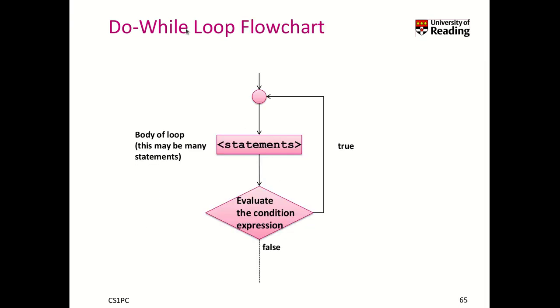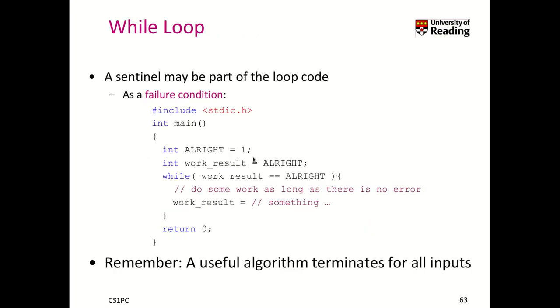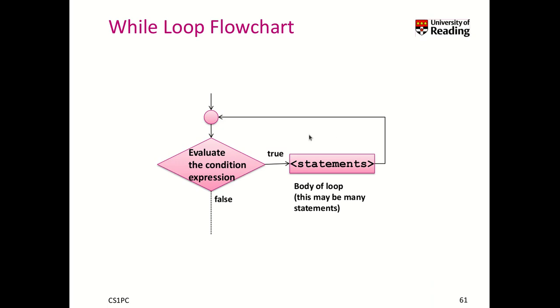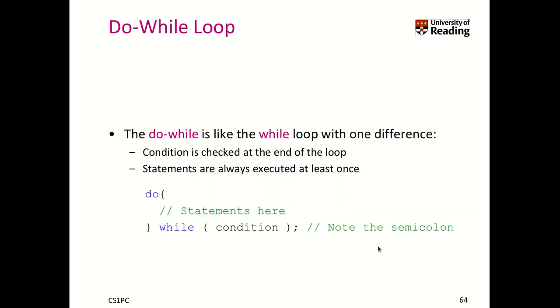Here is the do while loop flowchart. We execute the statements, and then we evaluate the condition expression. If it's true, we execute the statements again. So you see the slight variation from this little flowchart here.